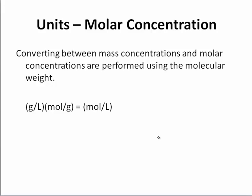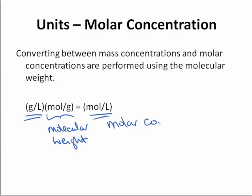Converting between the mass concentration and molar concentration is easily performed using the molecular weight of a compound. For instance, if you know the gram per liter or the mass concentration of a substance, you can multiply by the molecular weight of the compound, which is expressed as gram per mole, and that would give you moles per liter. This is defined as the molar concentration, which is often given the symbol M.